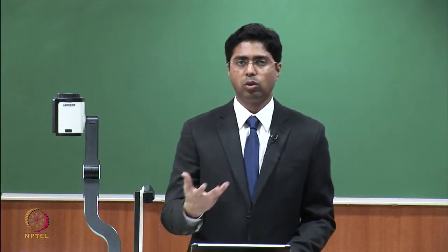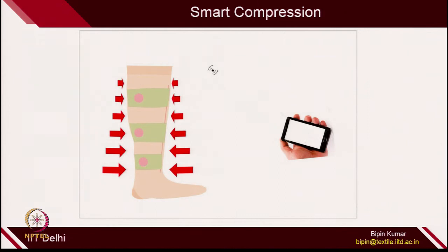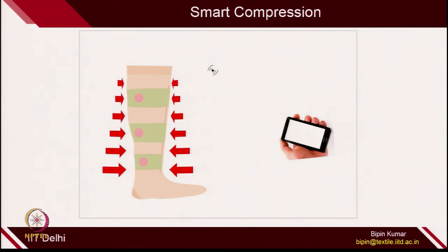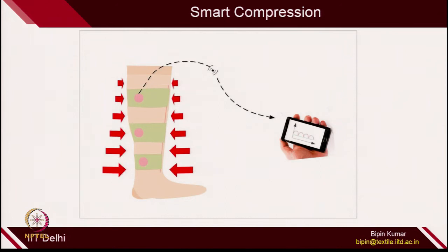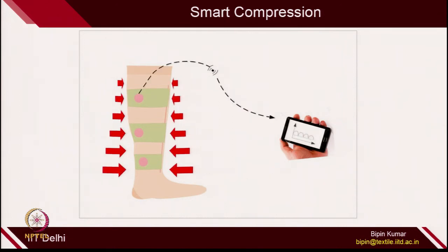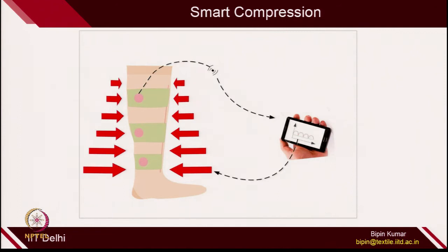This is what is possible nowadays. You can make a smart stocking which can give you some kind of massage effect. You can wear some kind of garment which will automatically compress and release. These kinds of smart activations are possible when you integrate these smart materials in this structure.